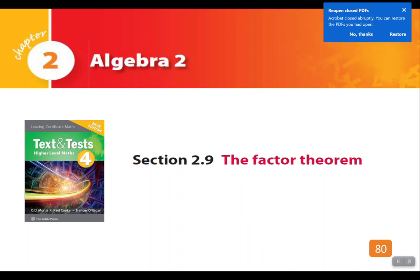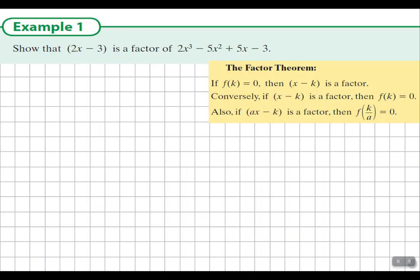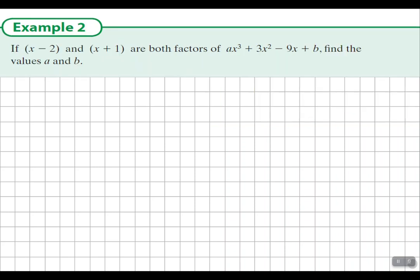We will go through how you show that 2x minus 3 is a factor using the factor theorem. You could use long division and get no remainder, but that's not using the factor theorem.